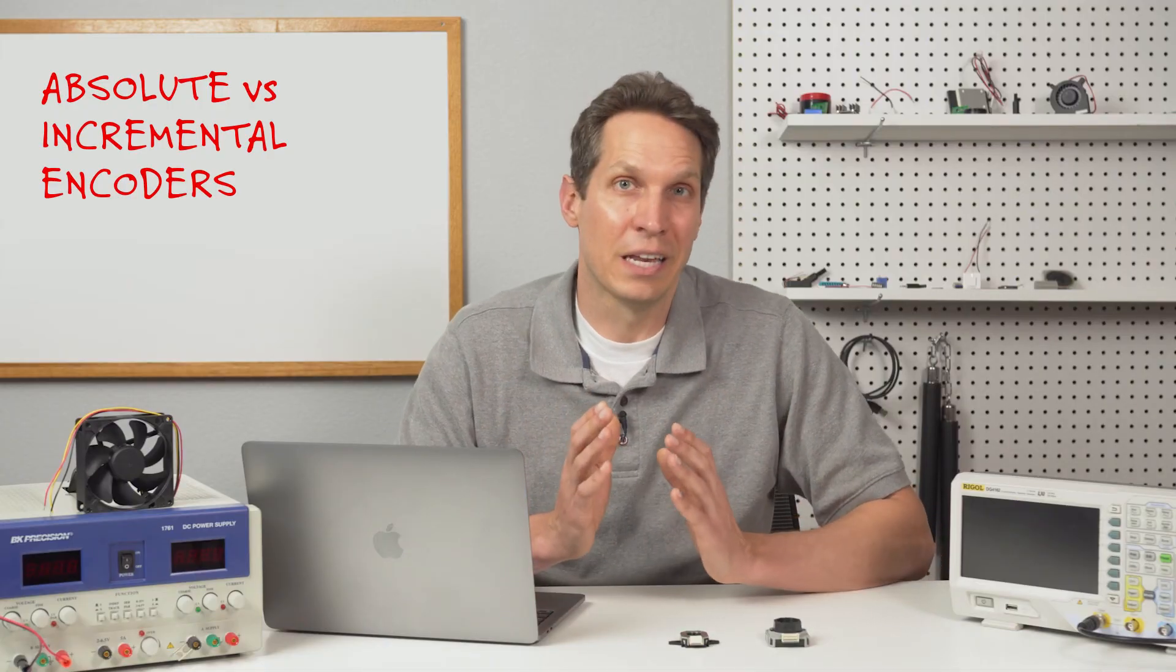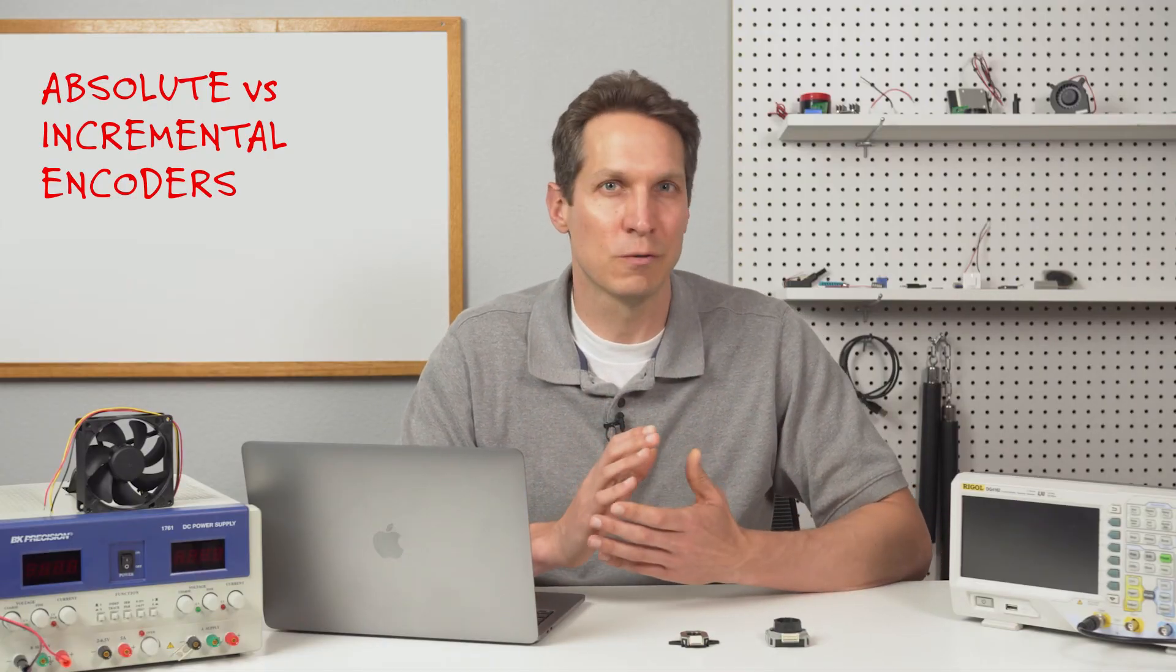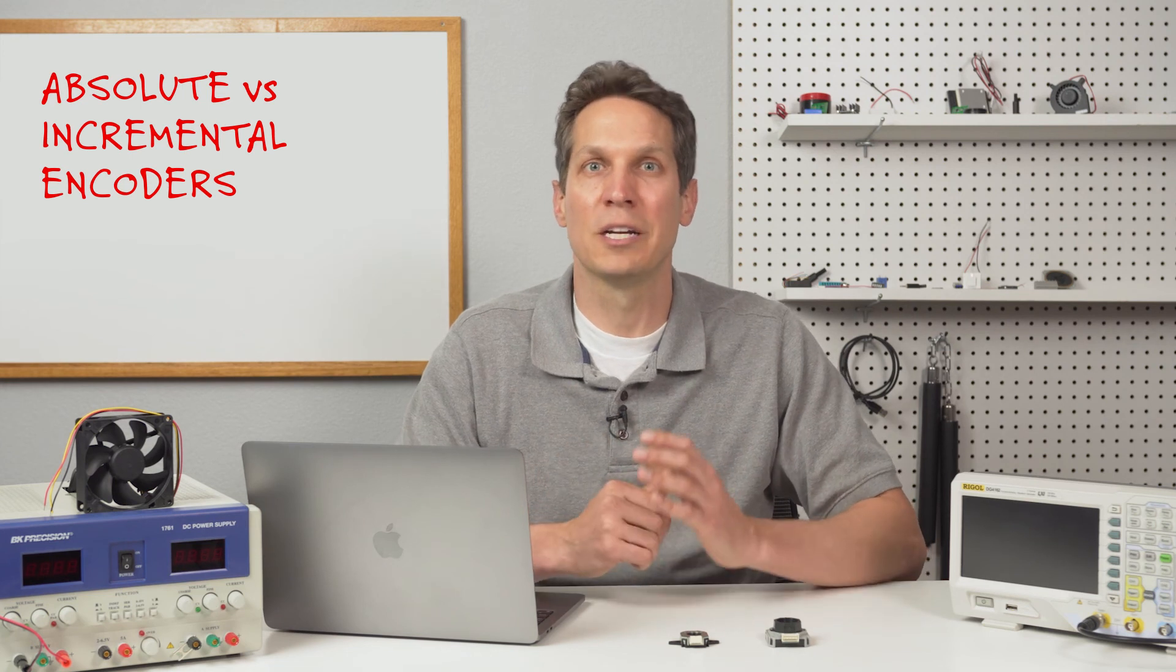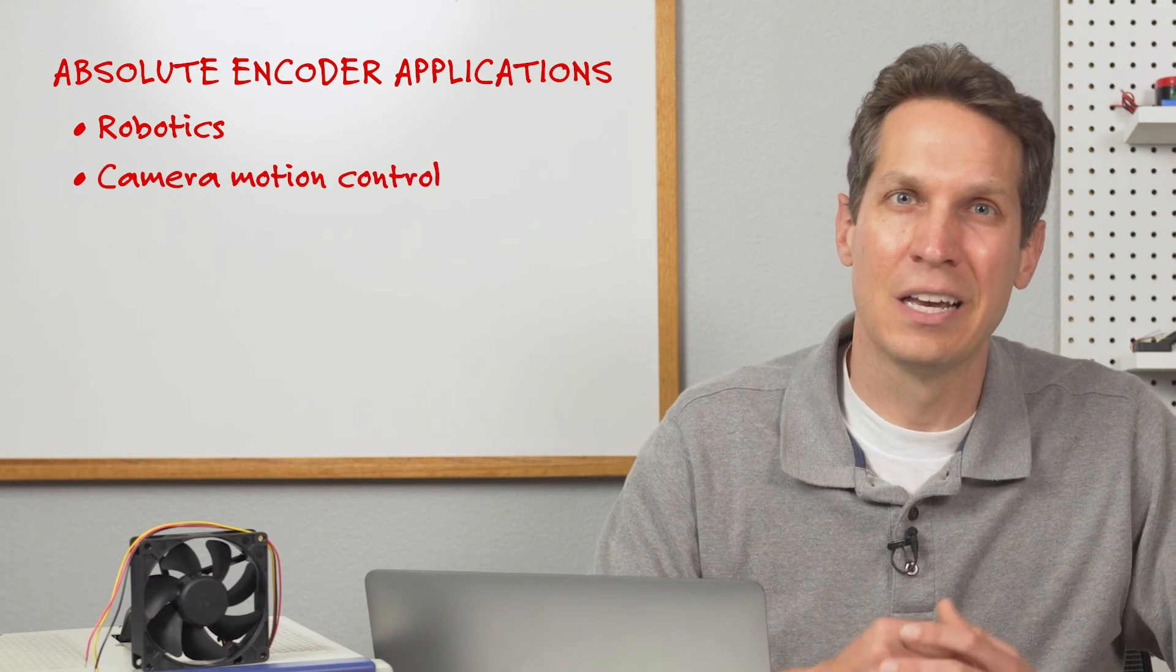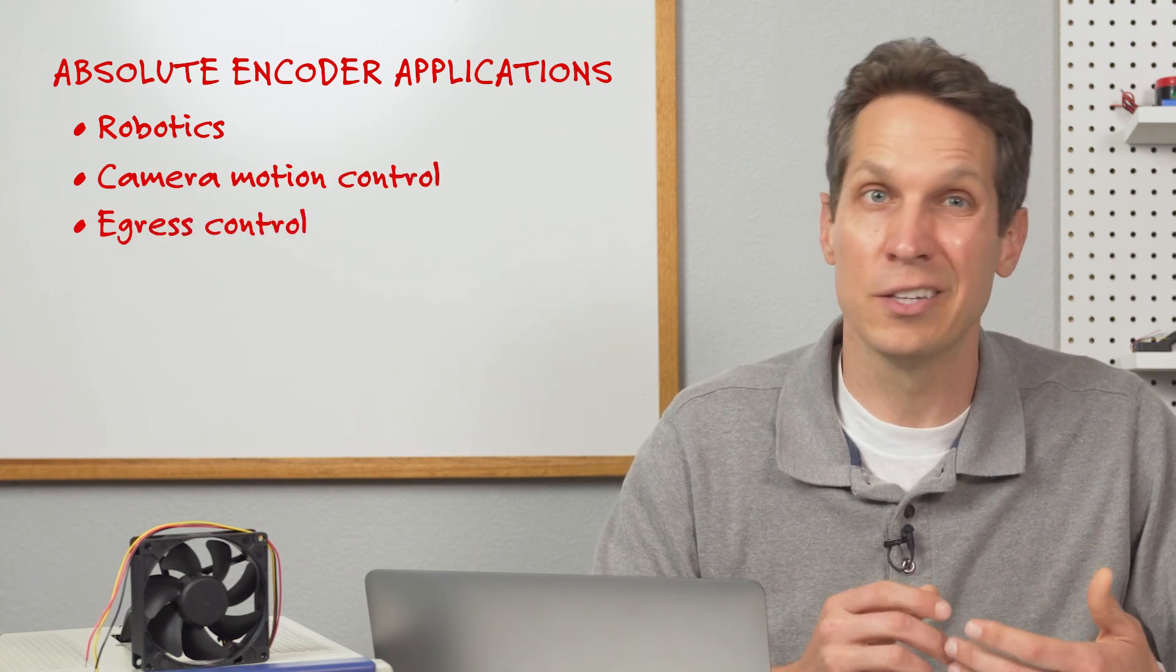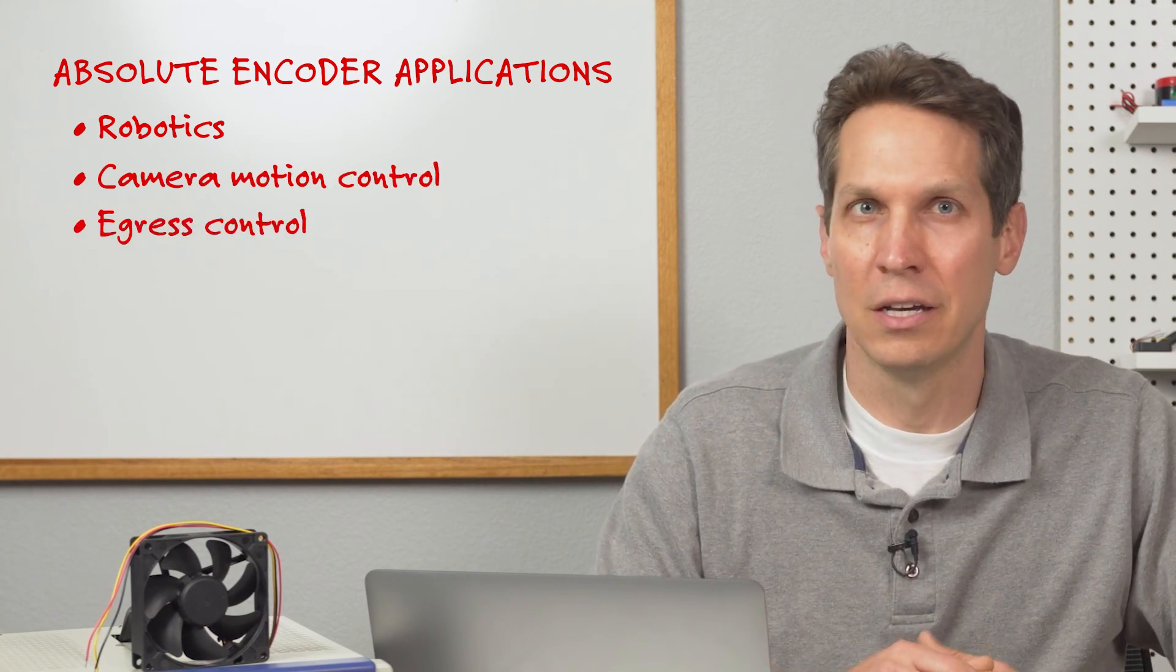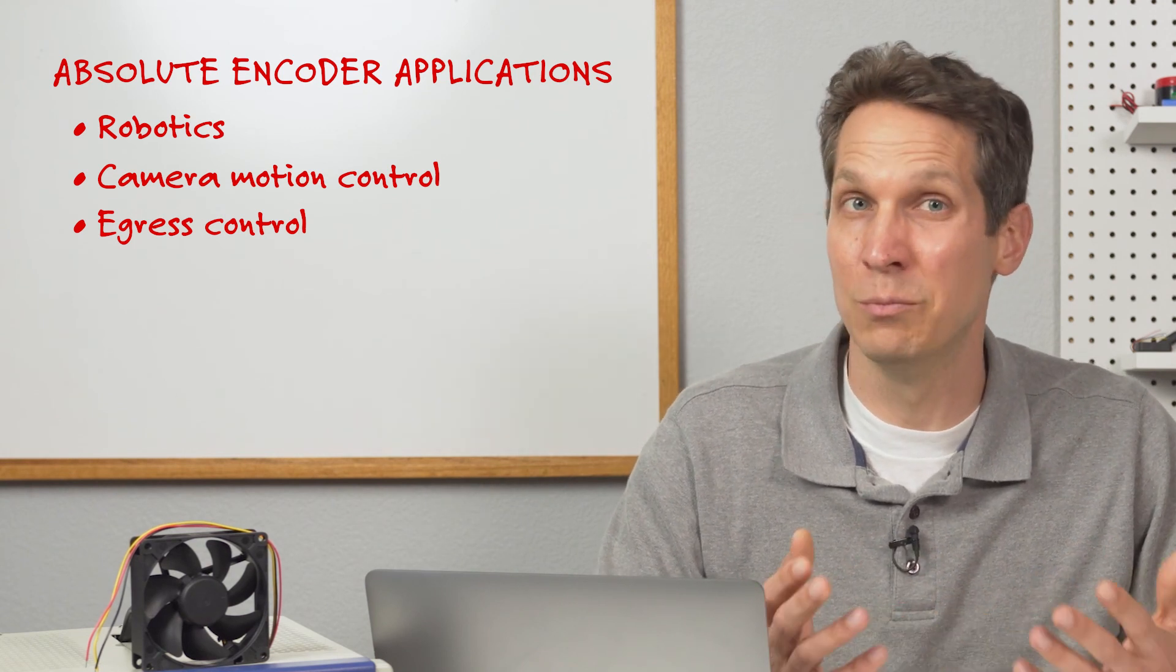As the price gap between absolute and incremental encoders continues to shrink over time, absolute encoders are becoming more and more popular. While almost a requirement in all robotics applications, absolute encoders are becoming more common in other industrial and even consumer markets, such as with camera motion control, egress control, and more.